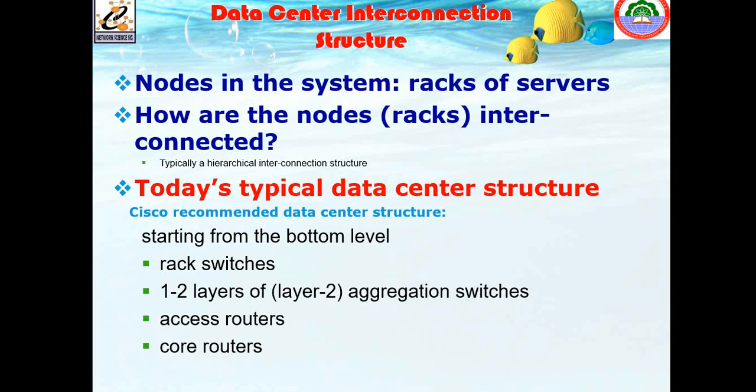The Google File System has different design space points: component failure is the norm, it is optimized for huge files, and is actively used by Google to support search and other applications. Performance may not be good for all apps since it assumes read-once, write-once workloads. GFS provides fault tolerance through data replication and fast, automatic recovery. The major theme in data center networking is the new networking issues posed by large-scale data centers — architecture, topology, addressing, routing, and forwarding.